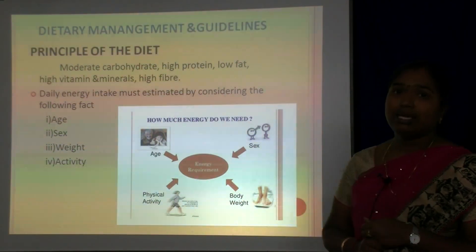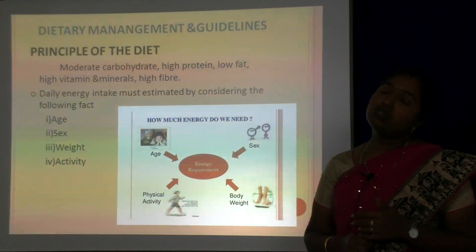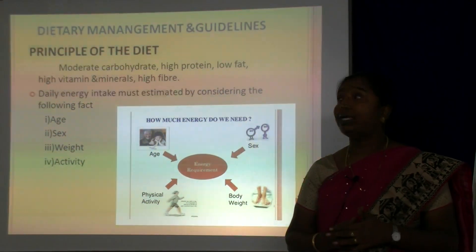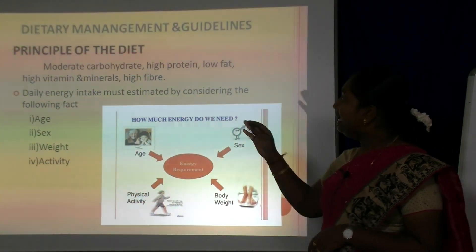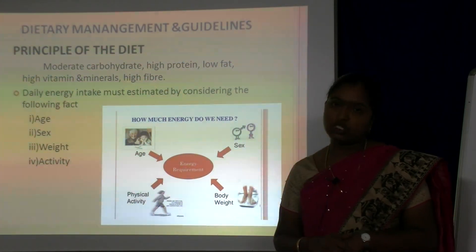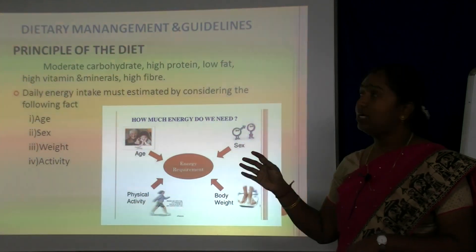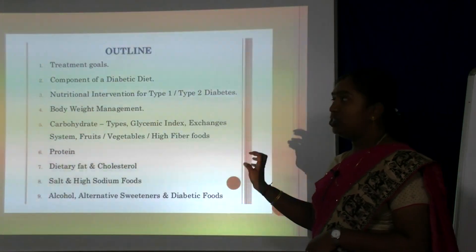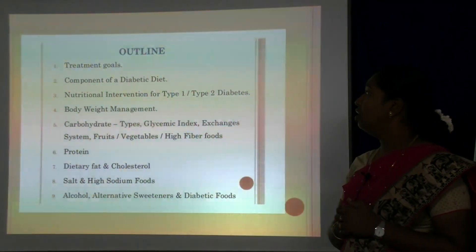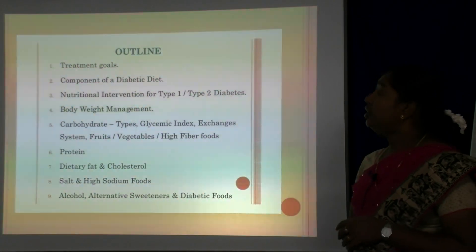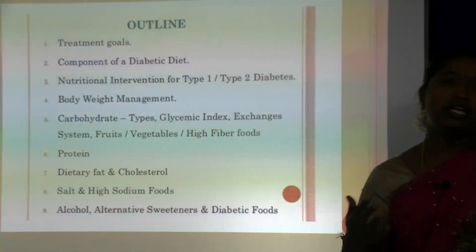Coming to dietary management and guidelines, the principle of the diet should be moderate carbohydrate, high protein, low fat, high vitamins and minerals, and high fiber. Daily energy intake must be estimated considering age, sex, weight and activity. The outline covers treatment goals, components of a diabetic diet, and nutrition intervention for Type 1 and Type 2, as there is a difference between the two types.